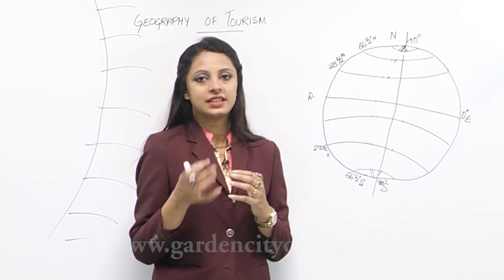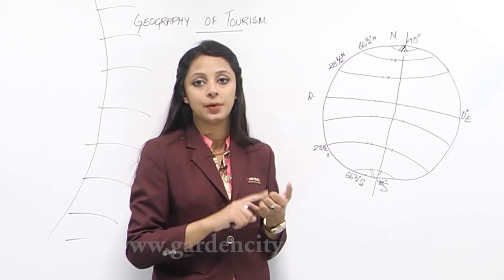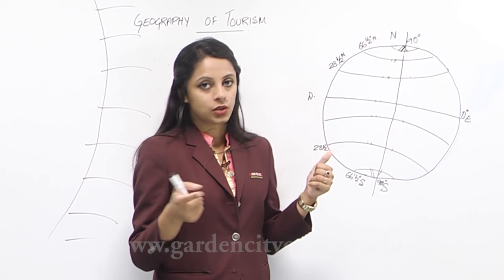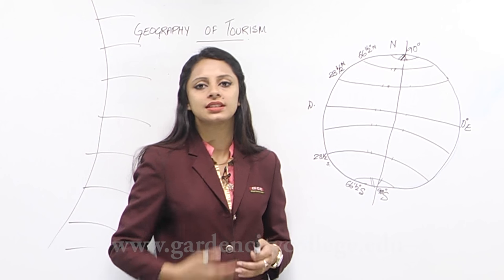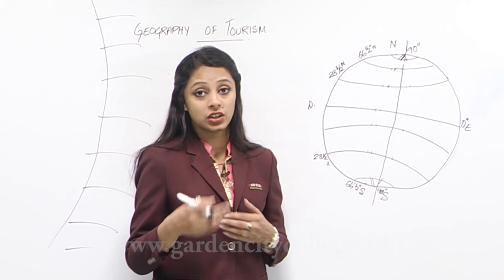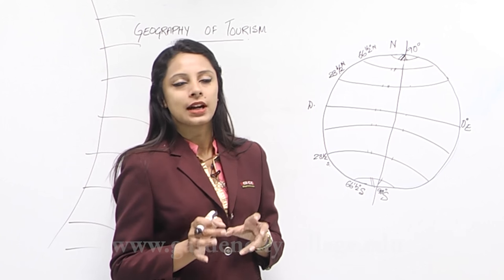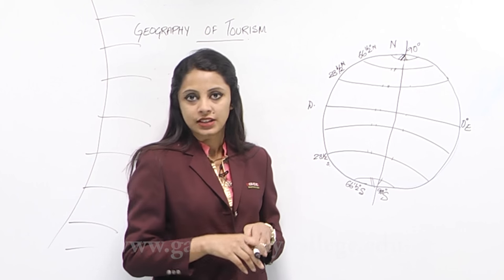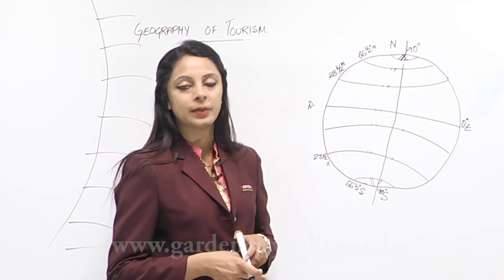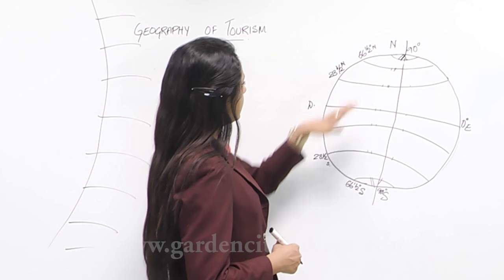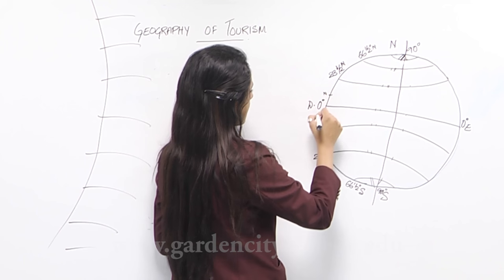The equatorial region is really hot throughout the year — there is just one season: summer. There is also a lot of rainfall due to the presence of water bodies and constant heat, which causes evaporation and leads to heavy rainfall. This water cycle promotes the growth of evergreen forests. The area runs from 0° to approximately 5° north and south of the equator and is very thinly populated due to extreme temperatures.